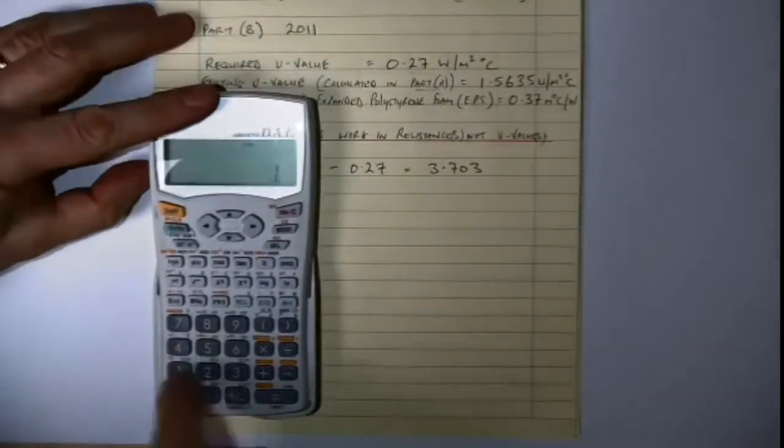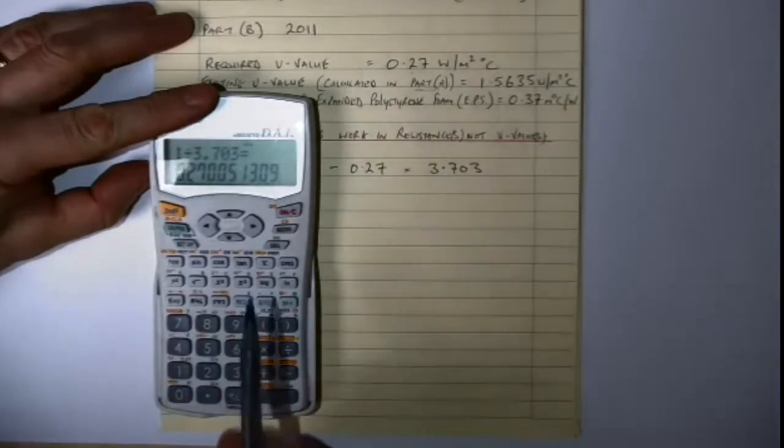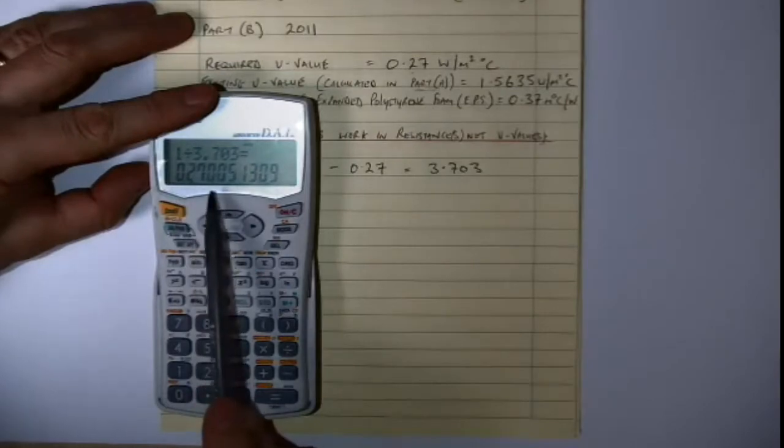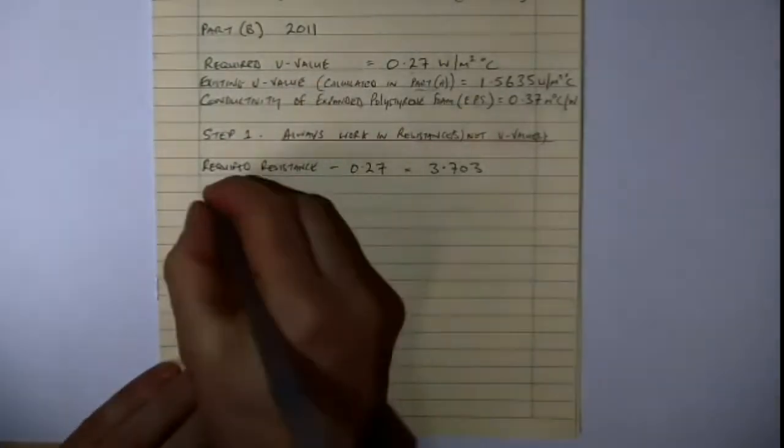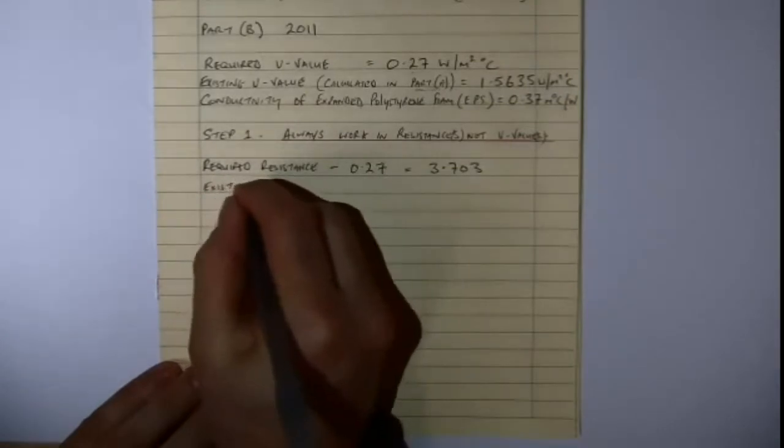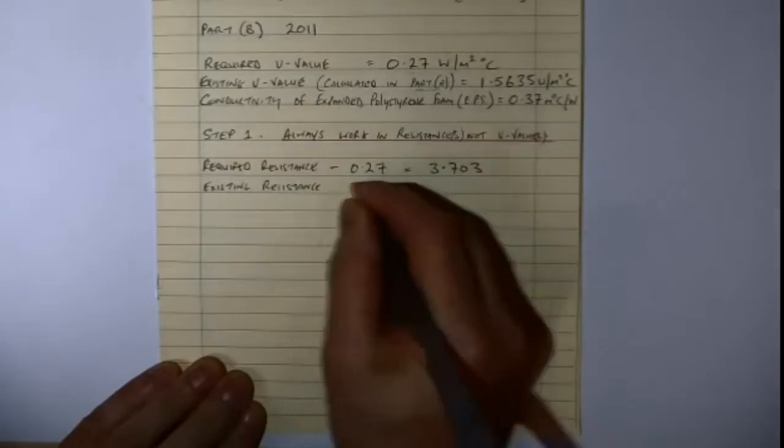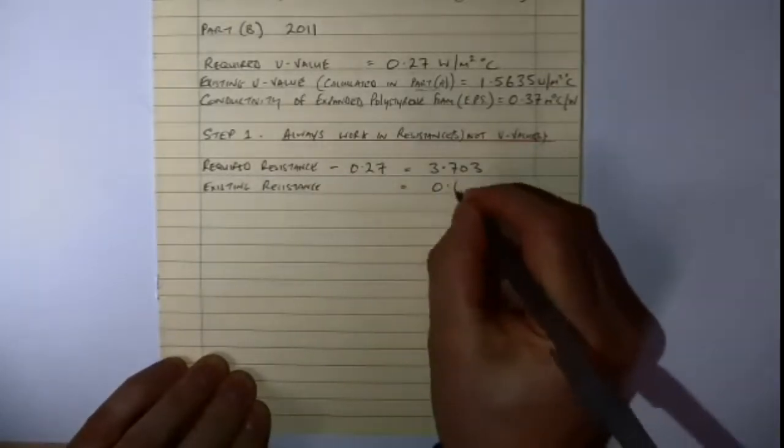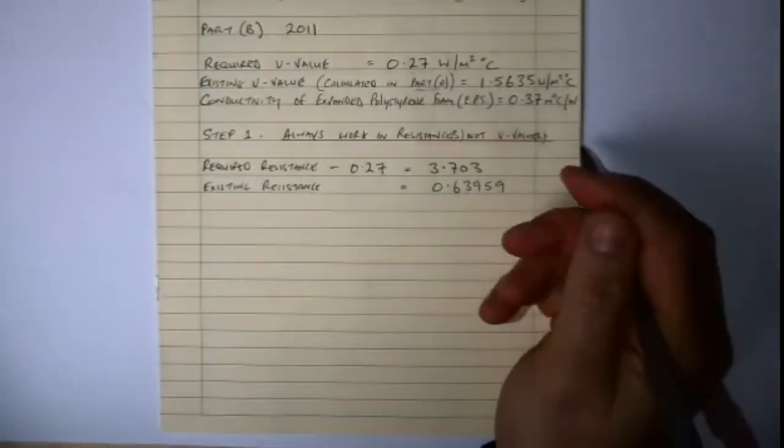You may have a reciprocal function on your calculator which will work fine. So I'm just going to take 1 and divide it by 0.27, and that gives us 3.703. And the existing resistance we have from our U-value table, we don't actually have to work with the U-value. We have that resistance from our table, and it's 0.63959.